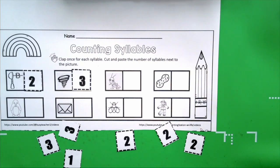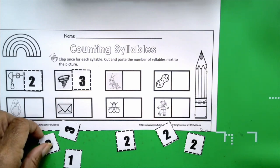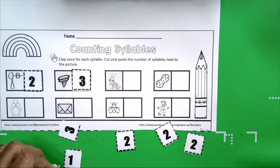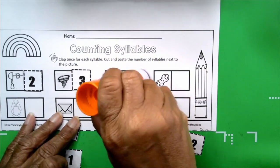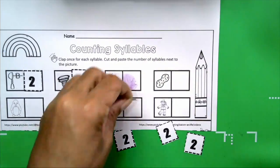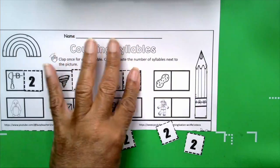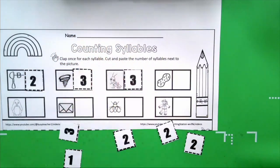Grasshopper. Grasshopper. Get your hands ready. Grasshopper. How many claps did you hear? Three. How many syllables are in the word grasshopper? Three. Very good. Let me get my number three. Get my glue stick. Give it a swirl. Okay.